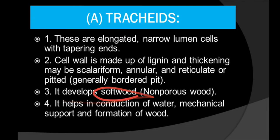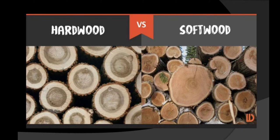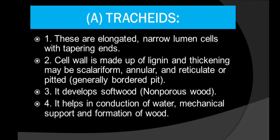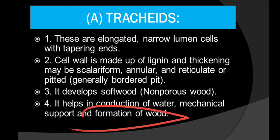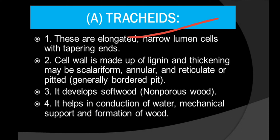Tracheids form softwood, also known as non-porous wood. The main function of tracheids is the conduction of water. They also give mechanical support and help in the formation of wood. Tracheids and xylem vessels — their main function is to conduct water only.